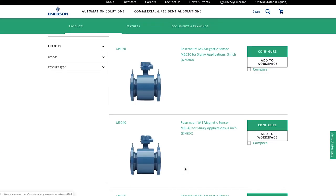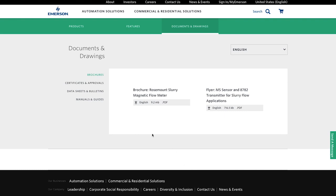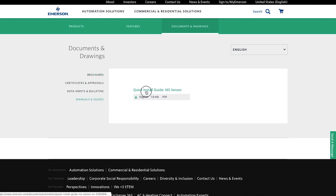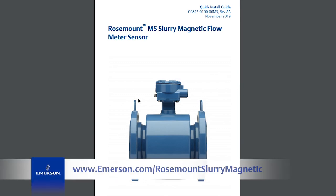For the complete set of installation instructions, please refer to the MS Quick Install Guide, which can be found at emerson.com/rosemount slurry magnetic.